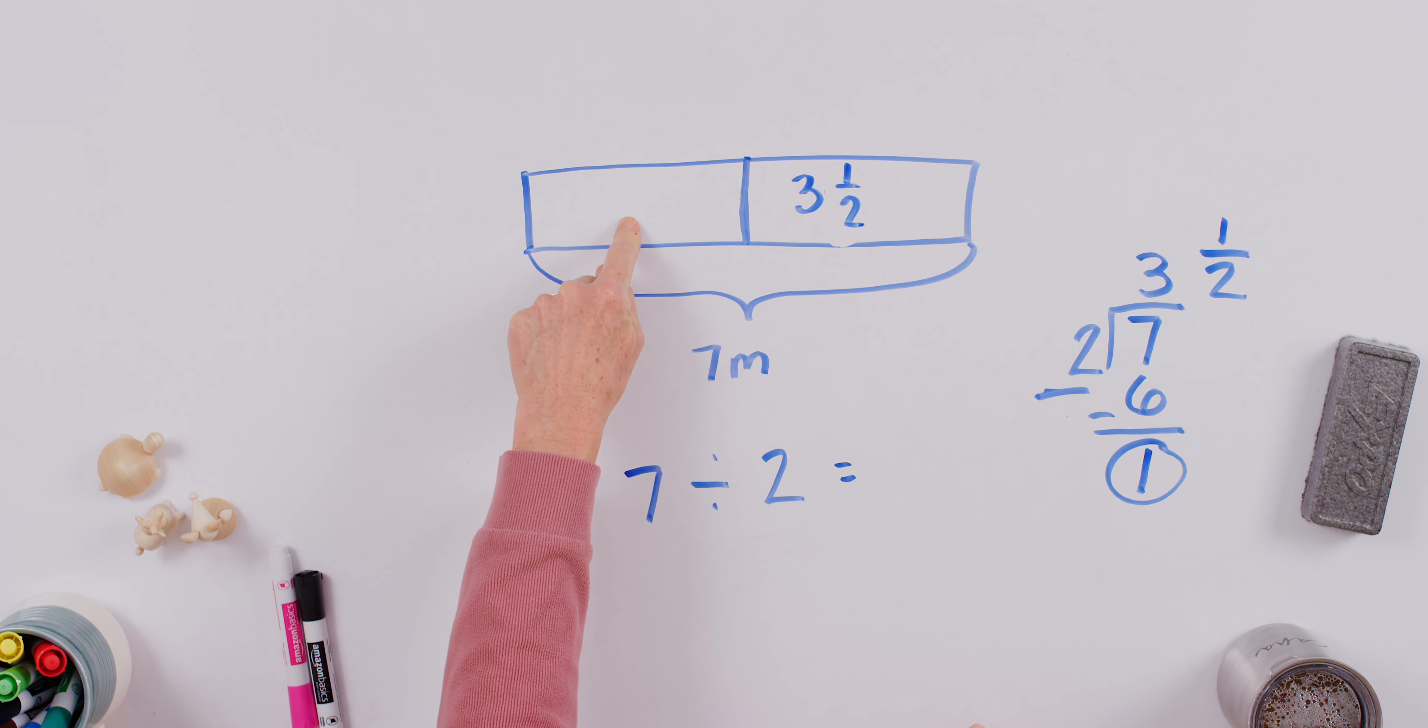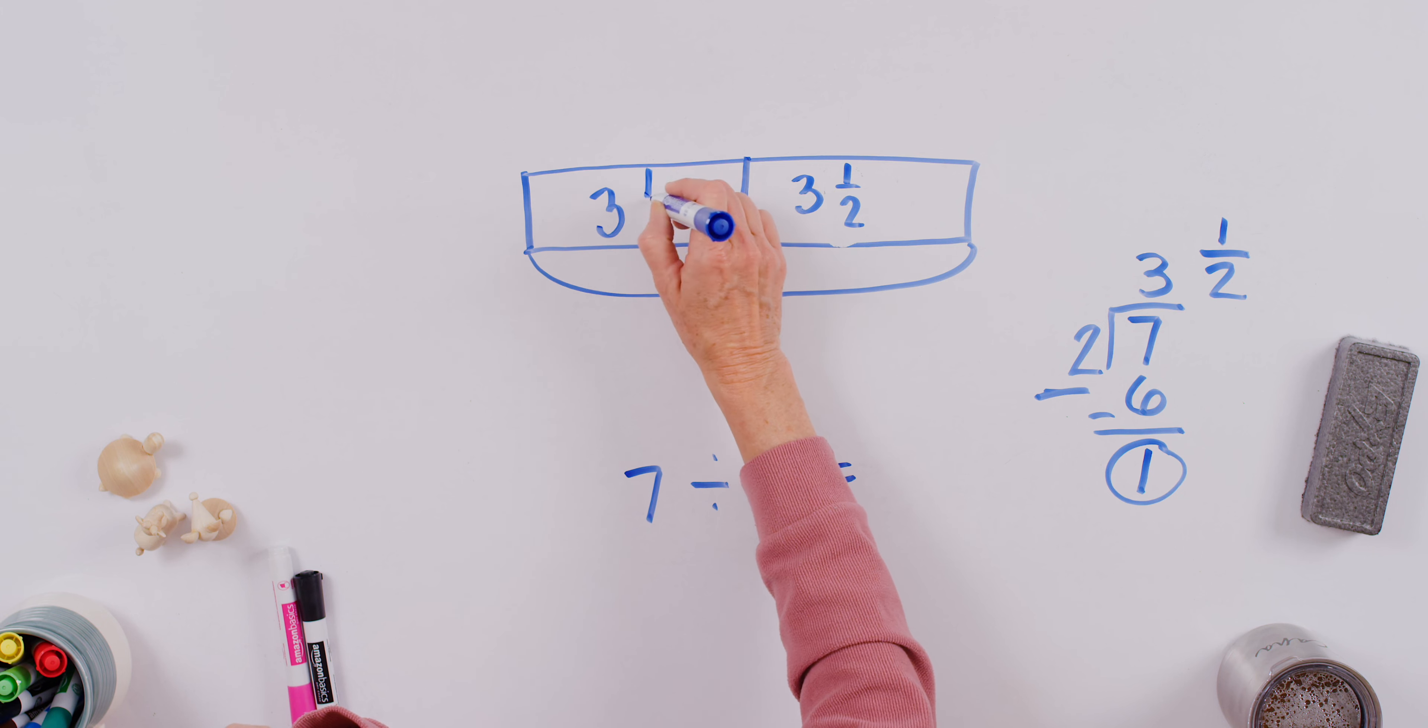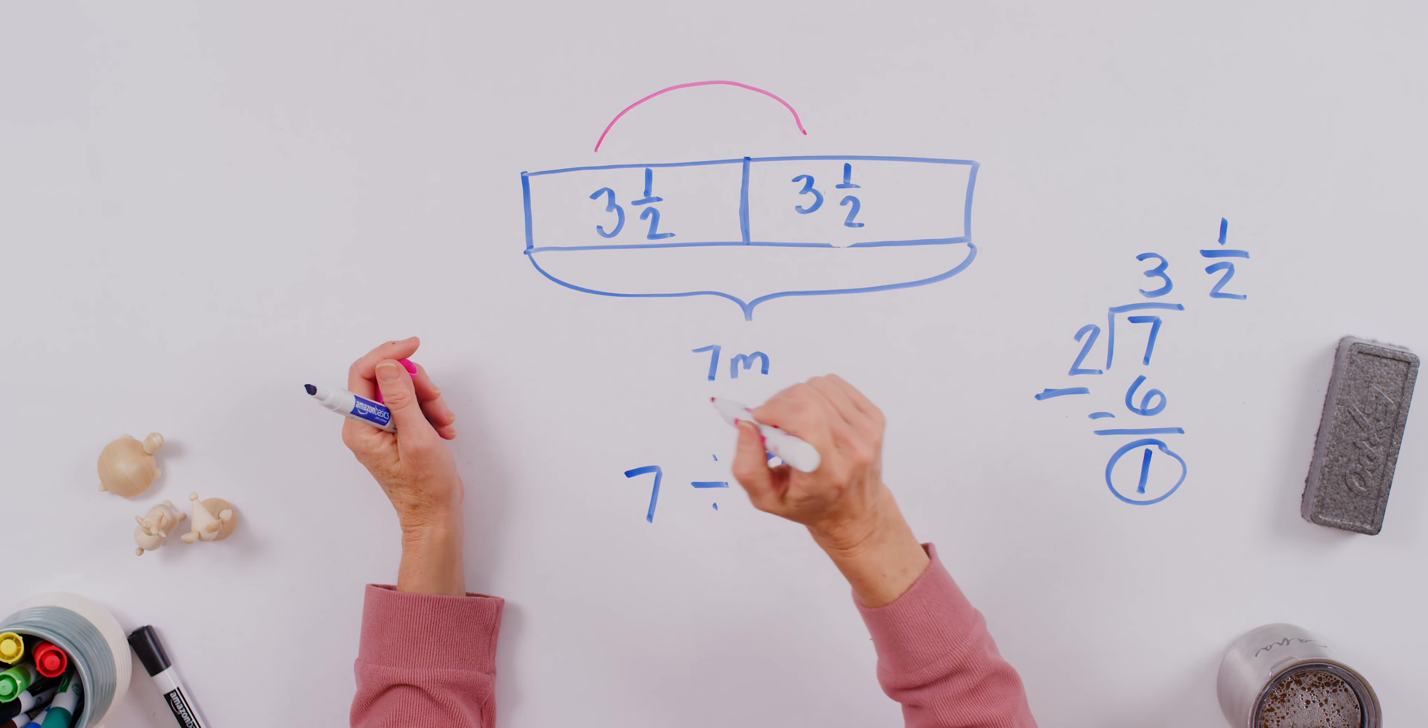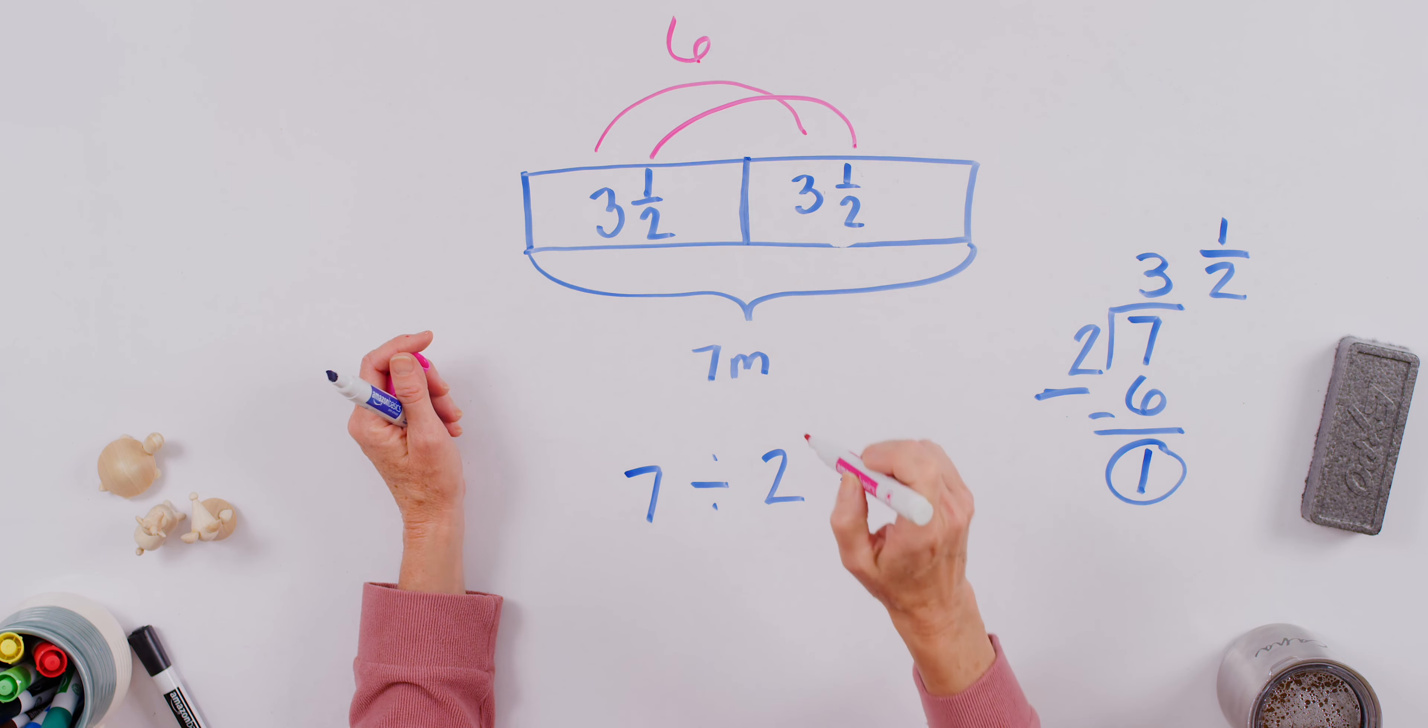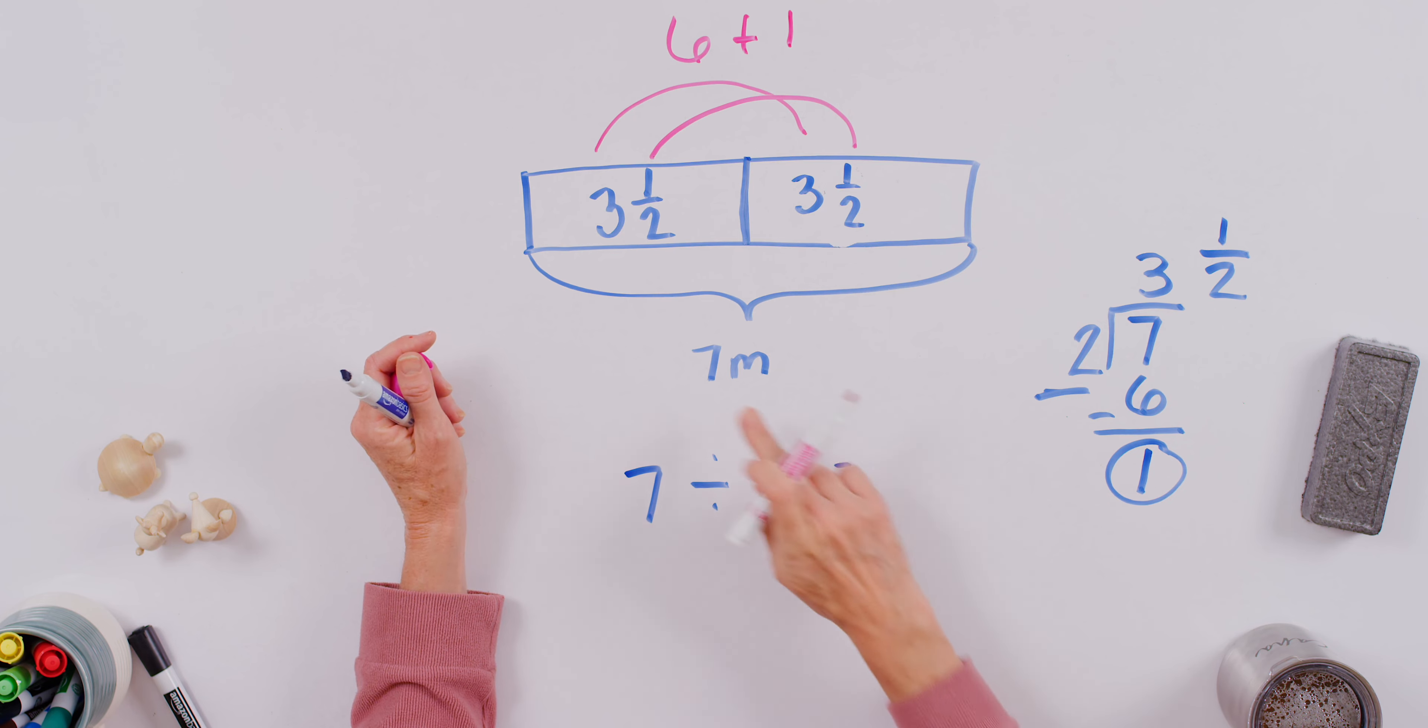So this value here is three and one half. What's that value? Yes, it's also three and one half. Let's check it to be sure. Three plus three equals? Good. Six. One half plus one half equals? One. Six plus one equals? Seven.